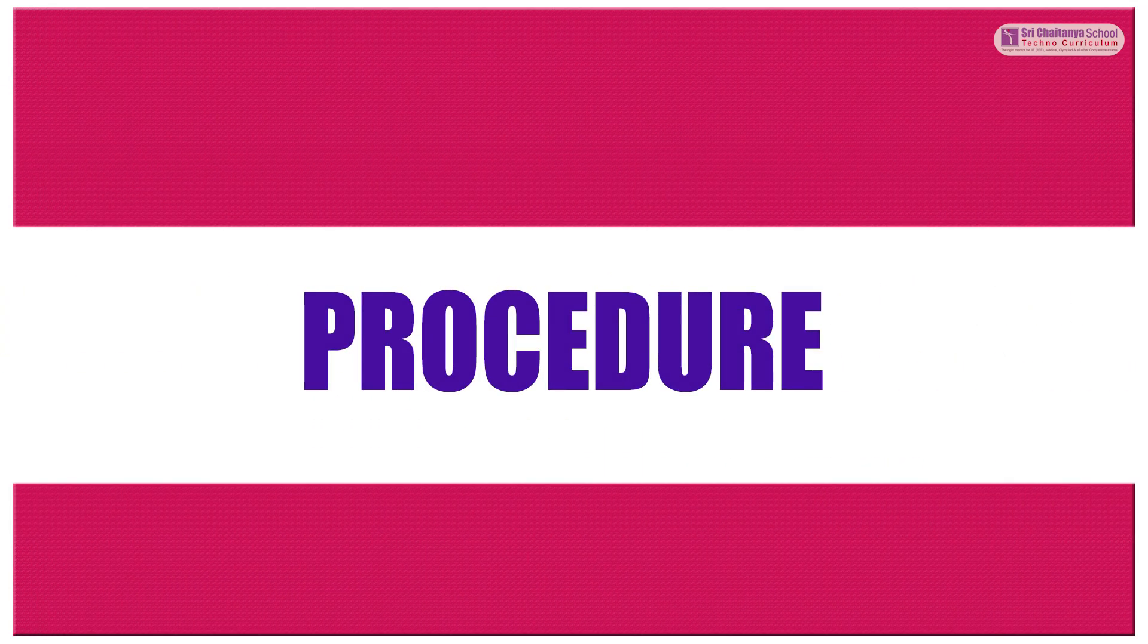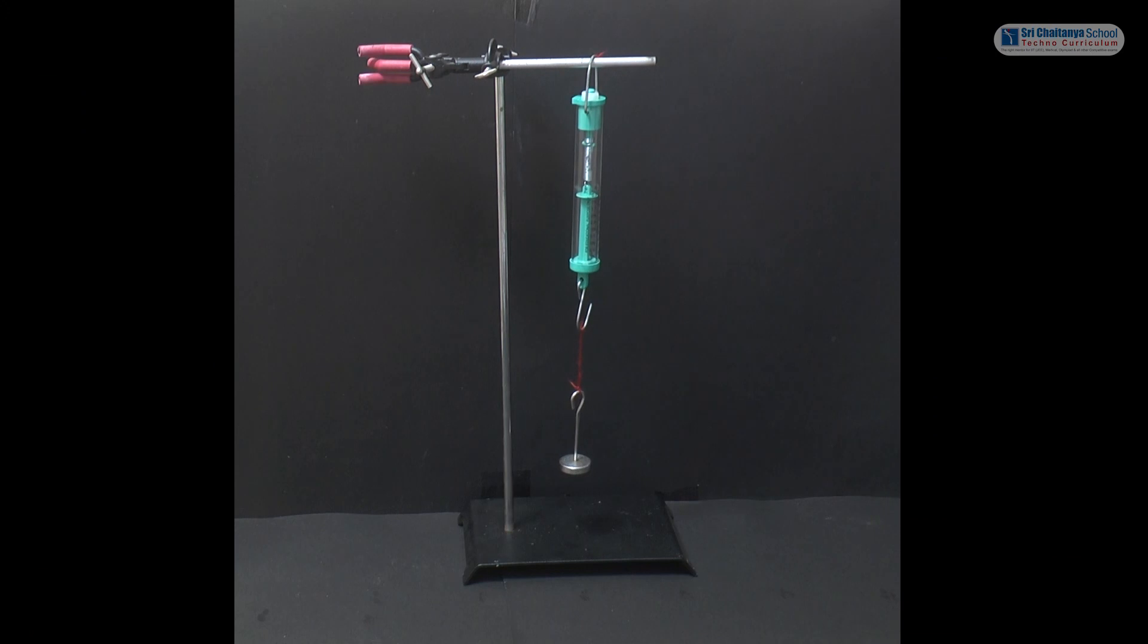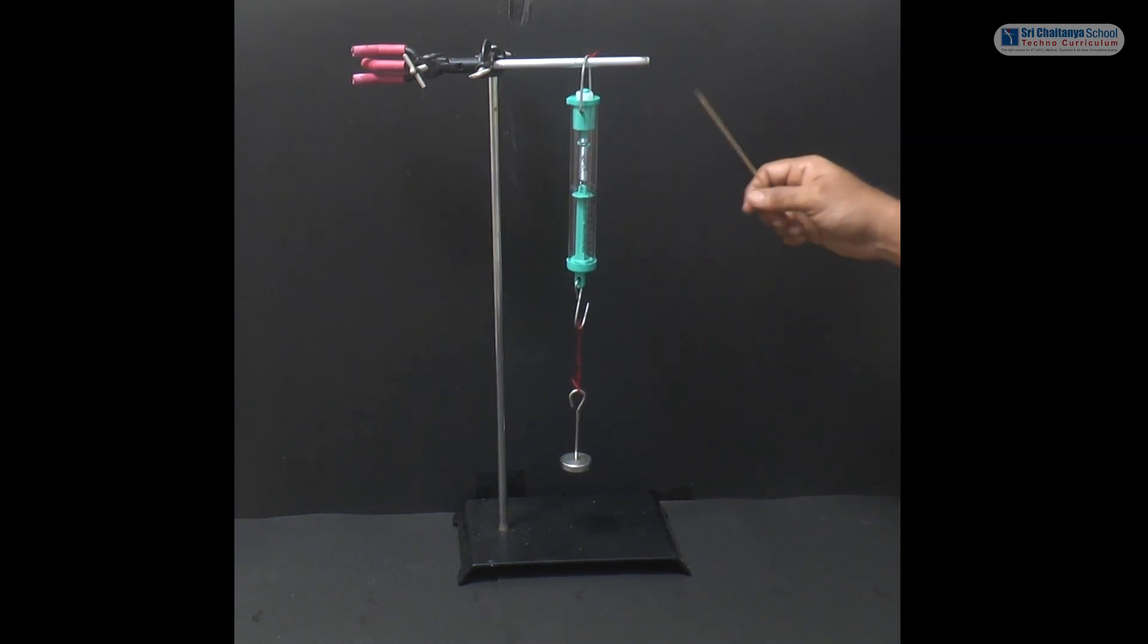With the knowledge of the theory, let us do this experiment. The procedure is to arrange the system as shown in the figure. A spring balance is connected to a string and the string further connected to a weight hanger.